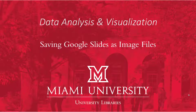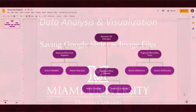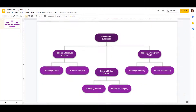Let's go into Google Slides where I already have a visualization made so that we can see how to do this. We have Google Slides open already and we've got a diagram here of a fictitious business chain, and we want to save it as a picture file.